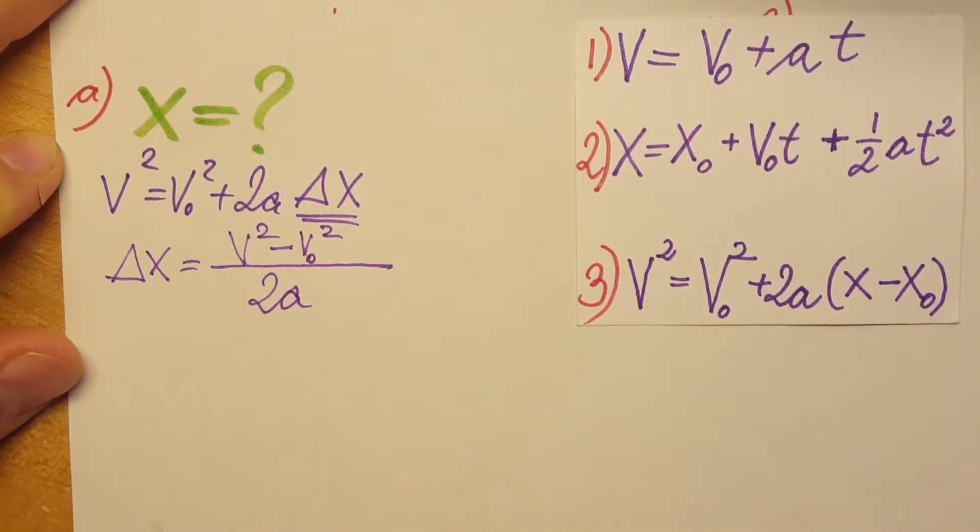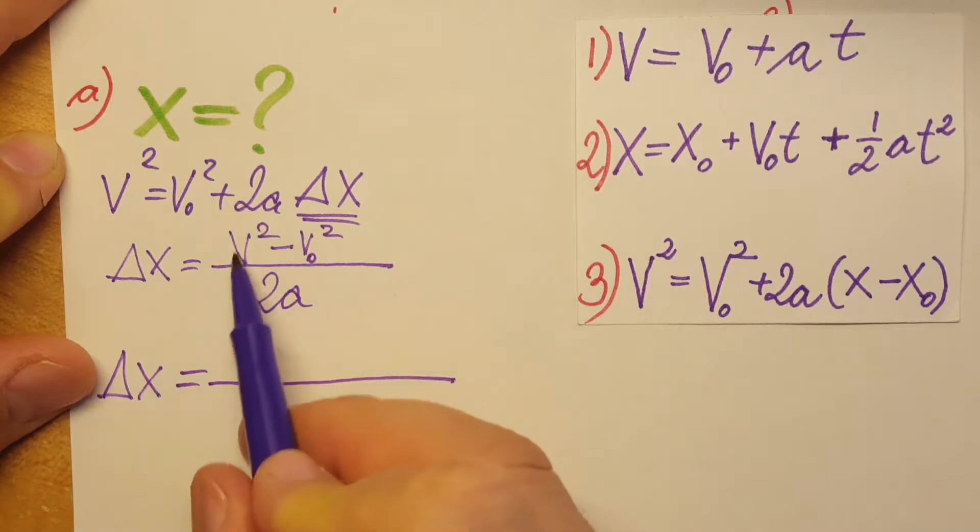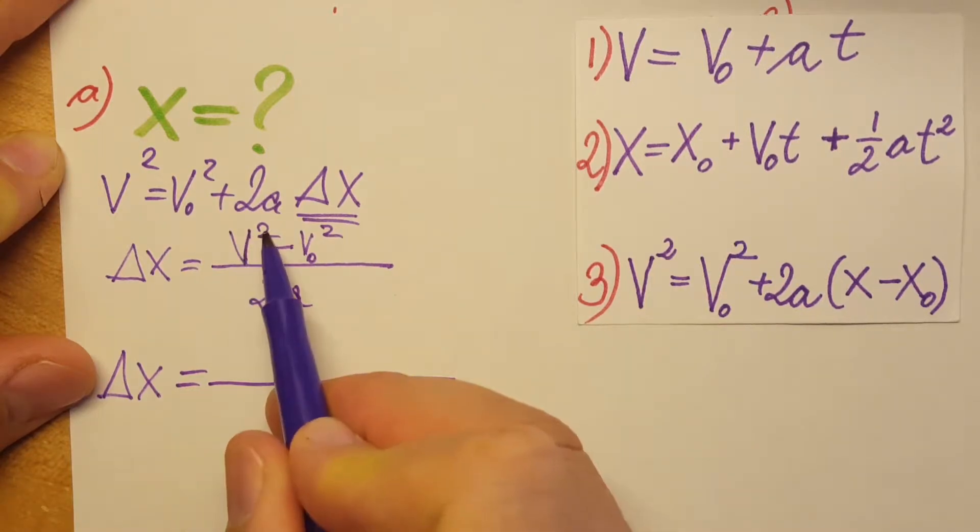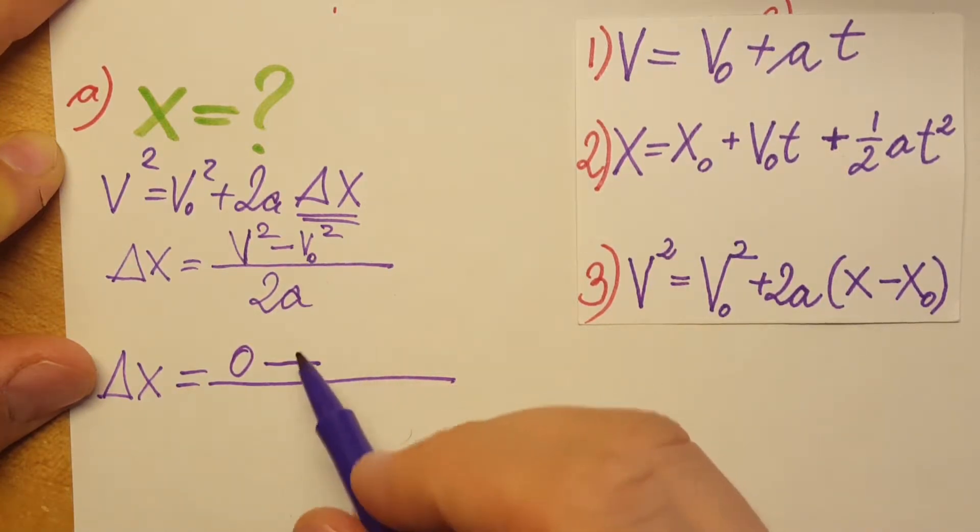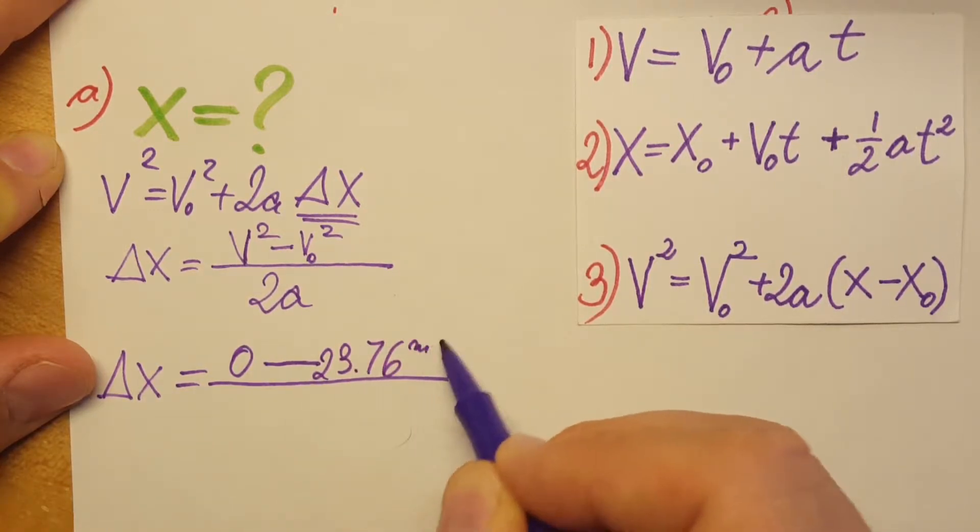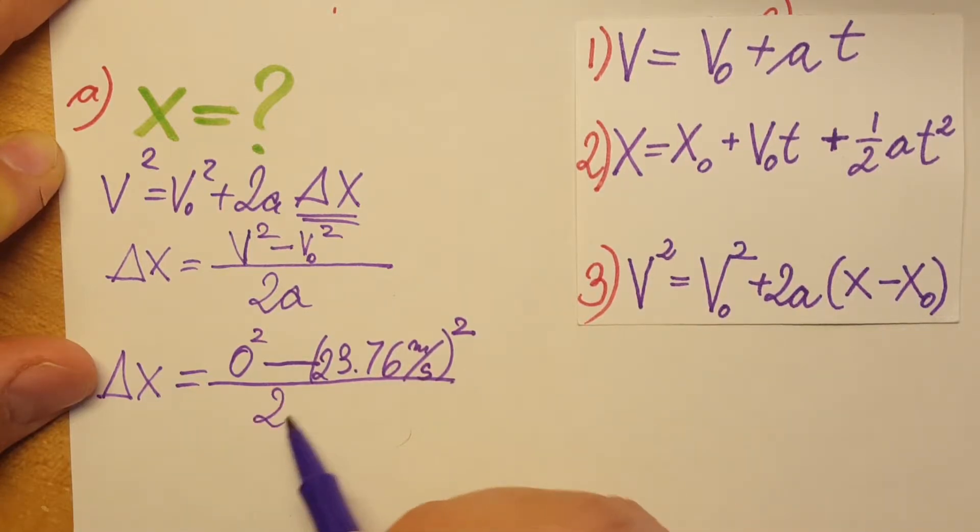We have all these values, so we can start plugging in. Our final v is zero since the car rolls to a stop. Our initial v was 23.76 meters per second - we'll square this. Zero squared is still zero, and we have two times...